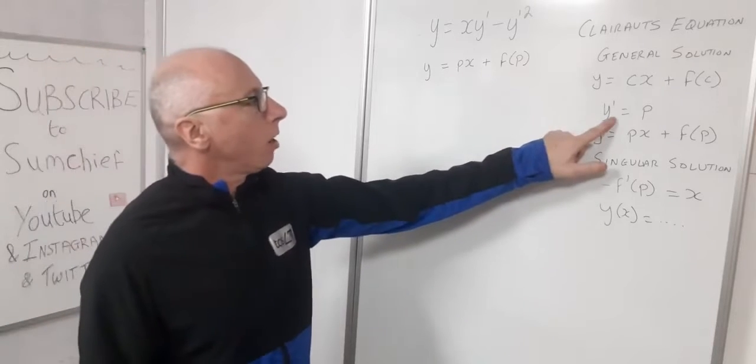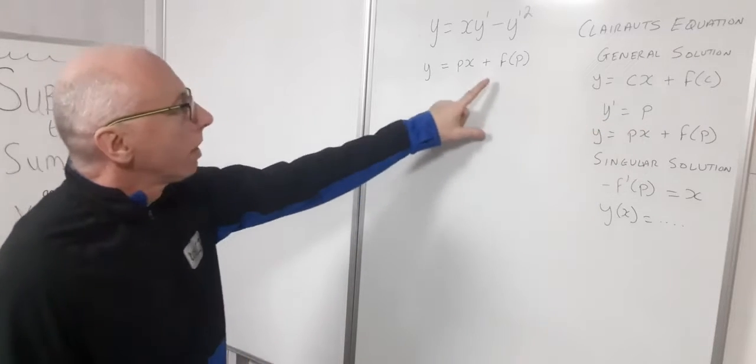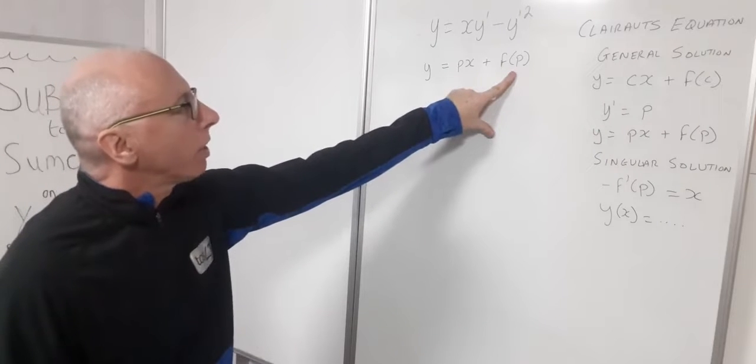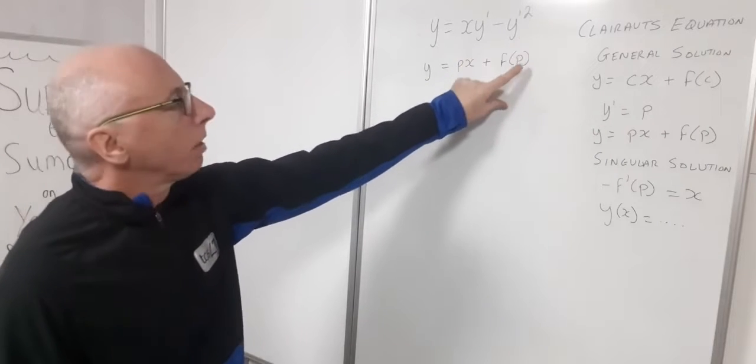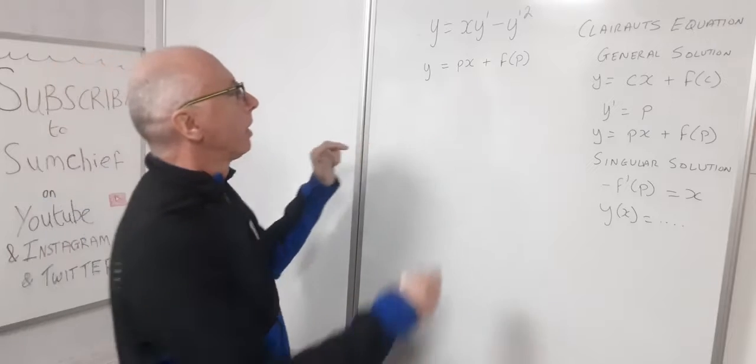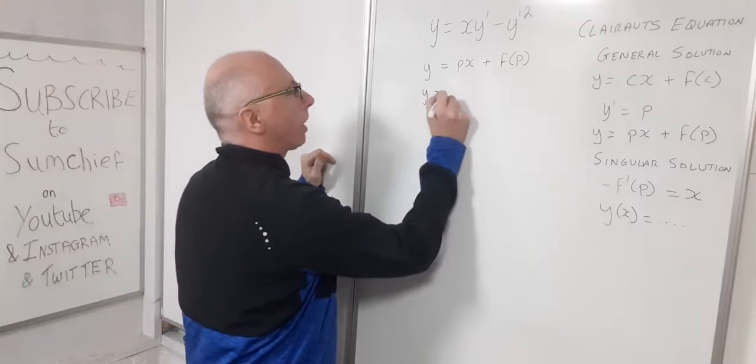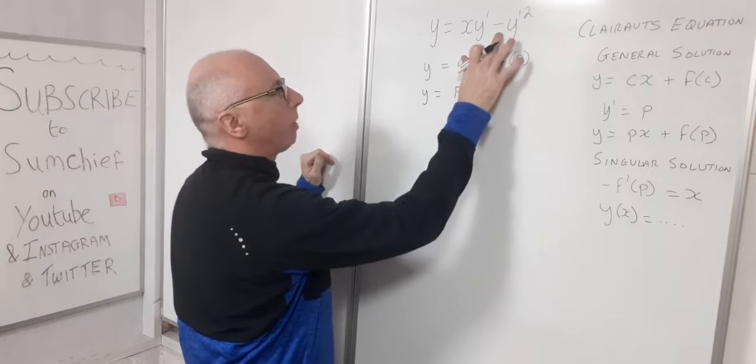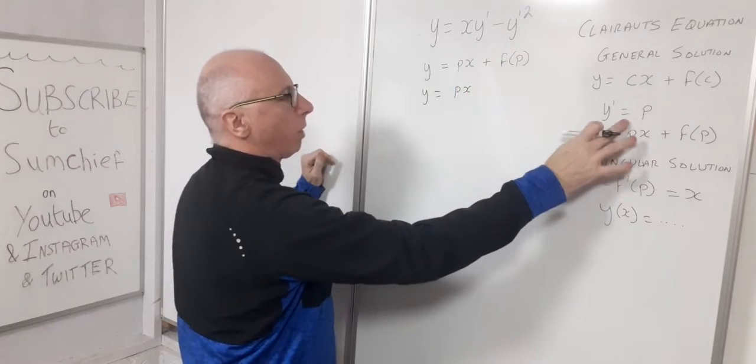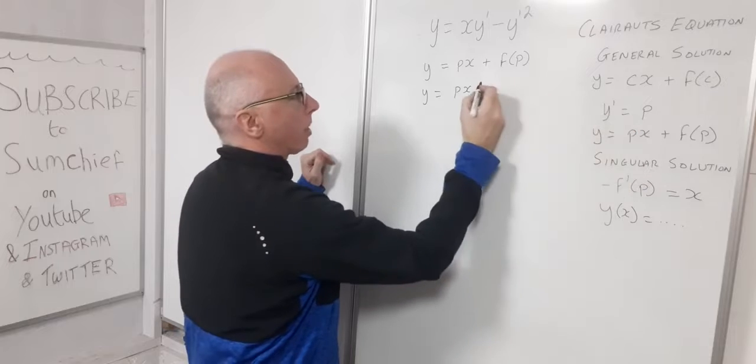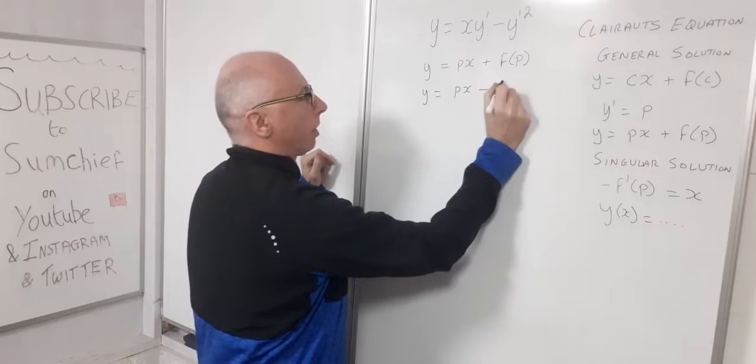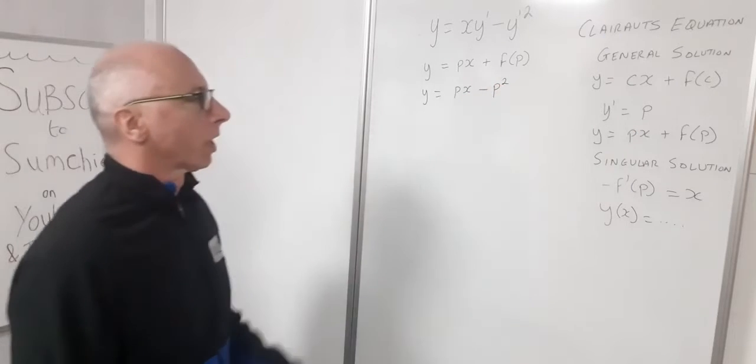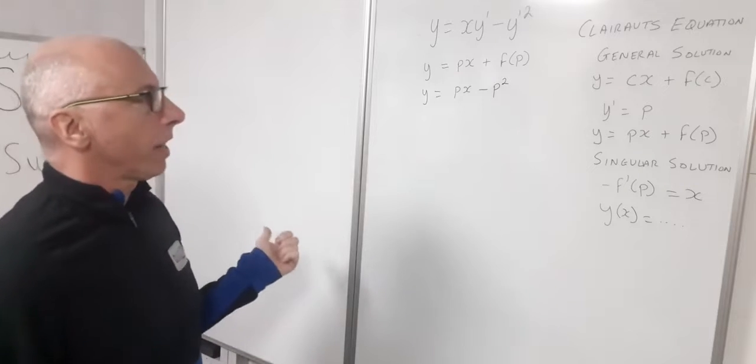Now we've got here our y prime that equals p. So if we set this up here with our y prime as p we can write this in terms of p. So now we get y equals px. Now here we've got minus y prime squared where our y prime is p. So we need to put it here minus p squared. Okay so that's what we've got.